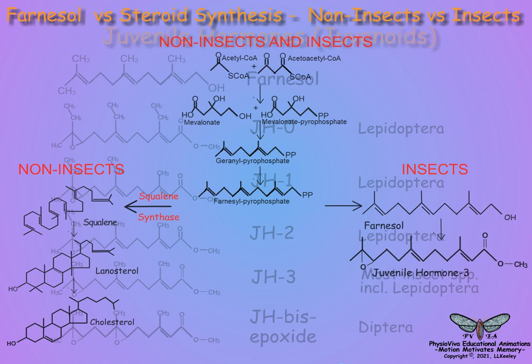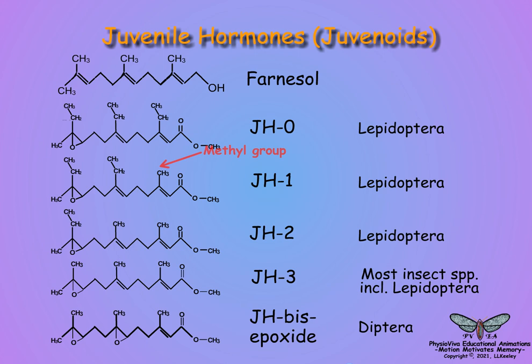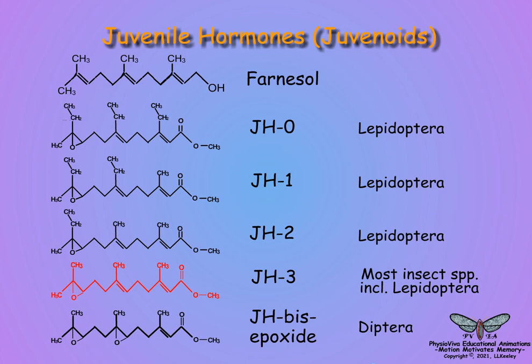It was subsequently determined that there were four forms of juvenile hormone based on how many methyl ethyl side groups were present in the molecule. The most prevalent form in most insect species is juvenile hormone 3. However, juvenile hormones 0, 1, and 2 are found in Lepidoptera, and a juvenile hormone bisepoxide in Diptera.